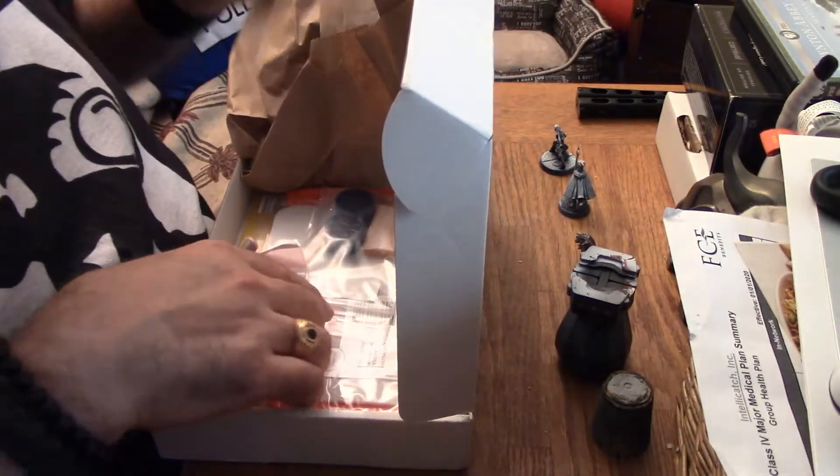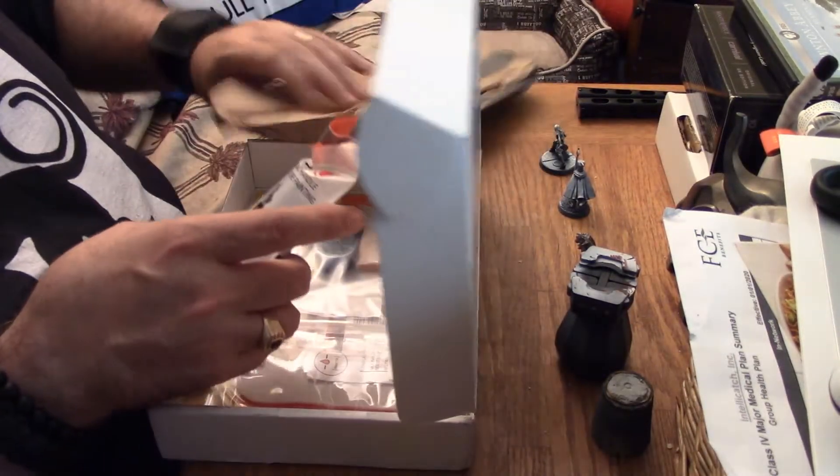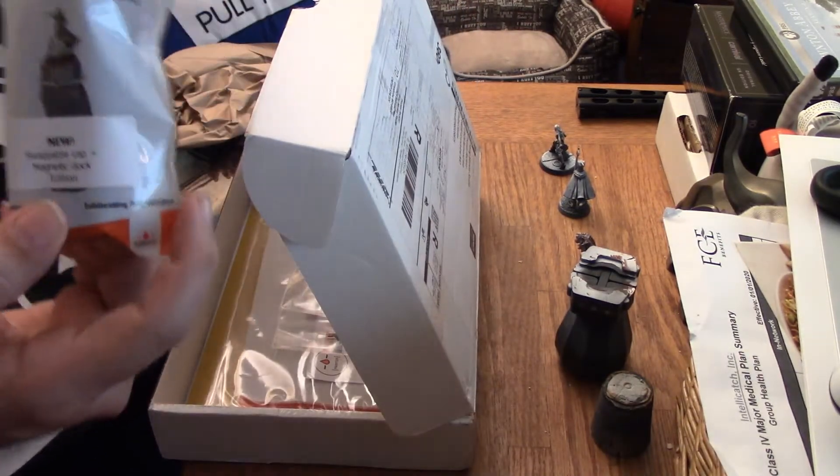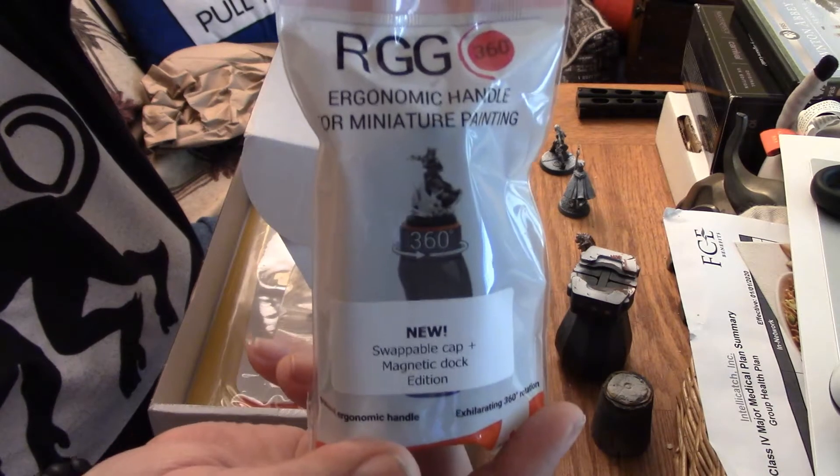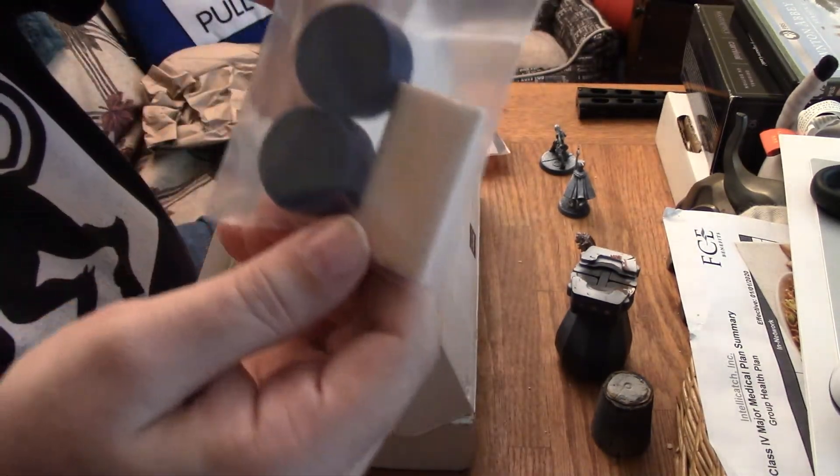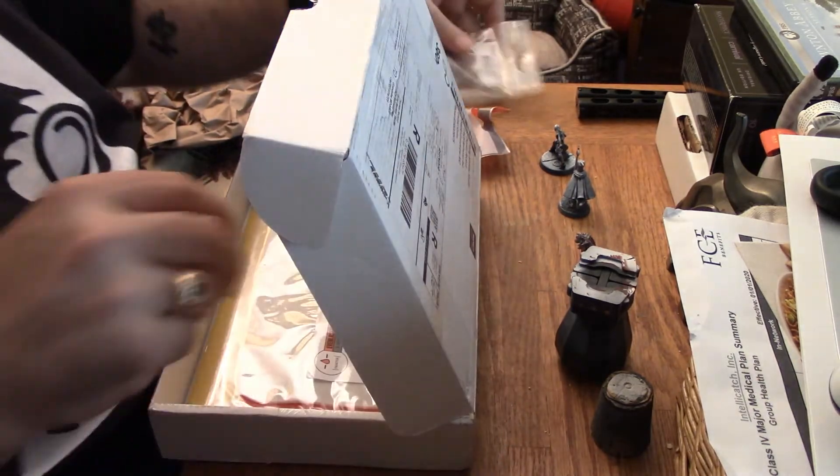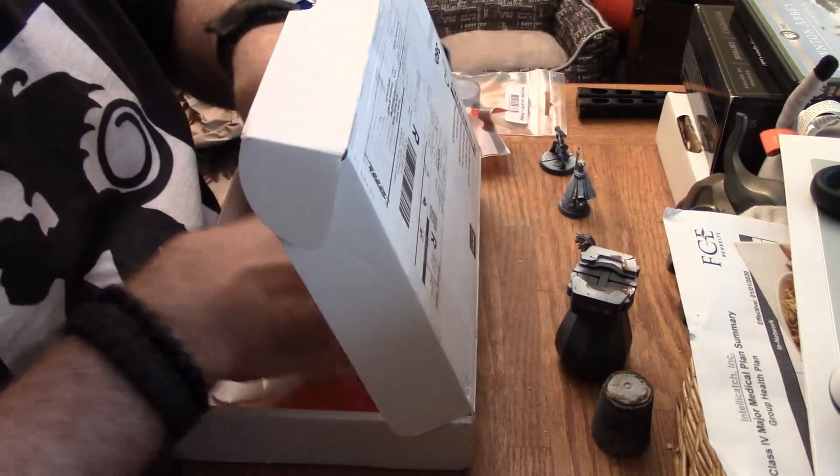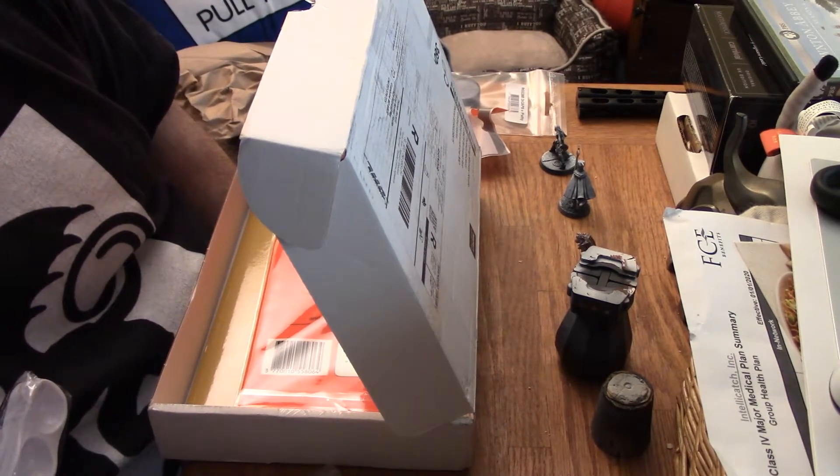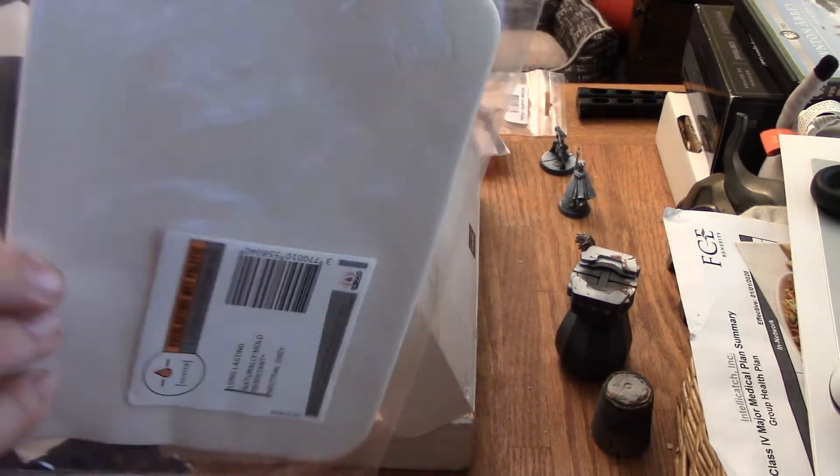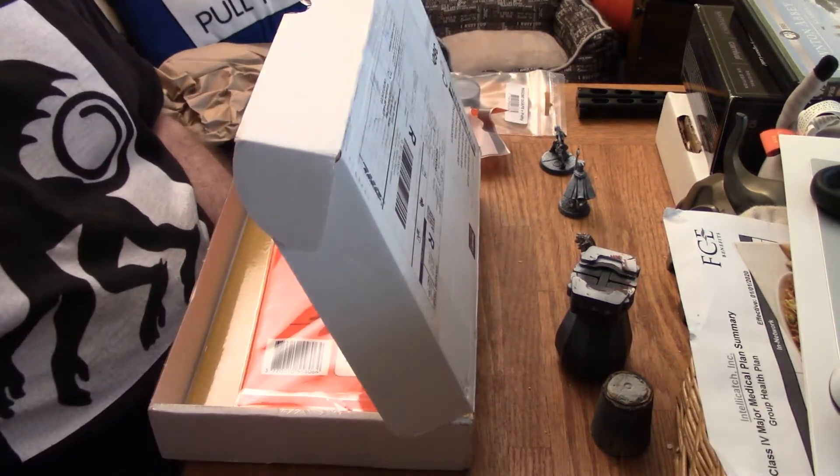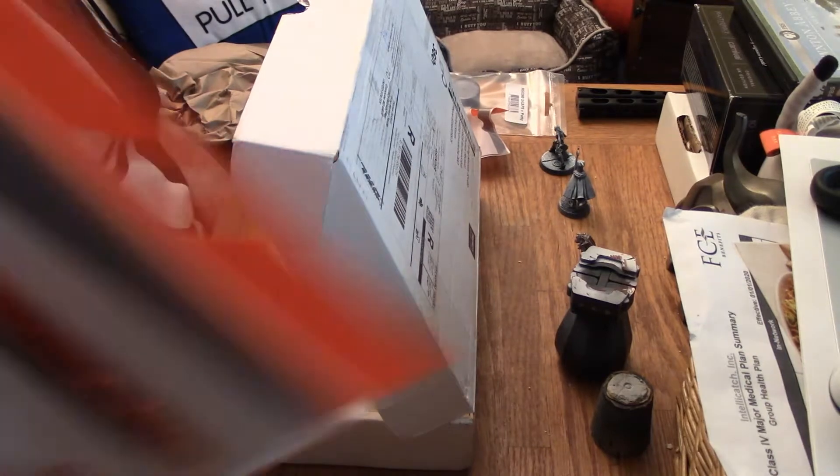All right, so first up we got packing stuff. We got the ergonomic handle here. I've got the two extra heads and the gummy stuff. And the rest of what's in this box is just another wet palette foam, another wet palette wavy, and some more wet palette papers.